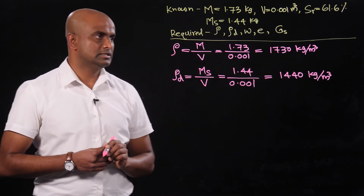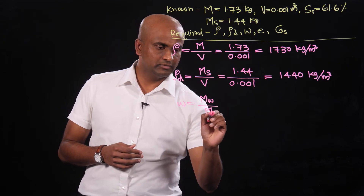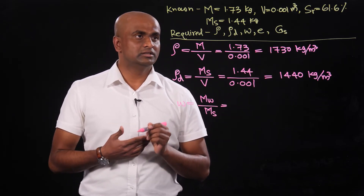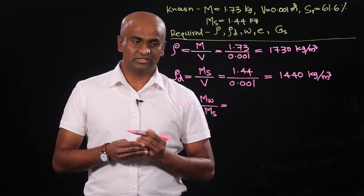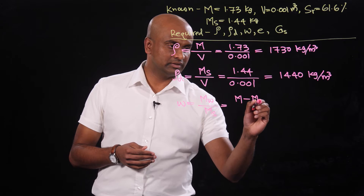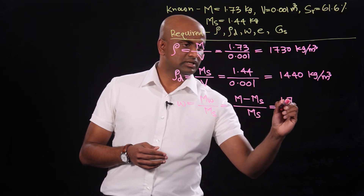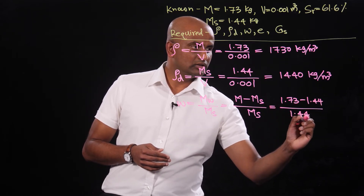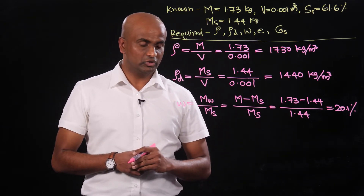Next we calculate the water content, which is defined as the mass of water divided by the mass of solid. The bulk mass is 1.73 kilograms and after oven drying the mass is 1.44 kilograms, so the difference is the loss of water. Therefore water content equals (1.73 minus 1.44) divided by 1.44, which gives 20.1 percent.